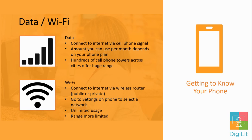You will go into settings on your phone to select a Wi-Fi network. When you select one, you will either be asked for a password if it's a private connection, or it will immediately begin to connect to the network if it's a public connection.